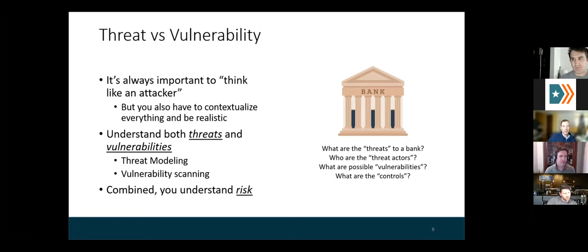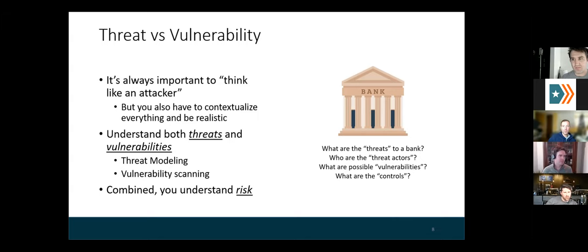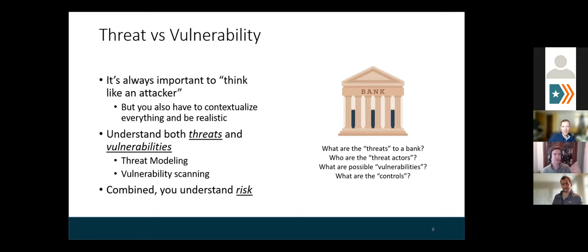Robbers with guns — absolutely. Robbers with guns specifically: the people could be threat actors and the threat there could be armed robbery. That's a spot-on example. We have one threat: armed robbery. Threat actors: bandits with guns. Inside corruption — somebody skimming money from the inside — nice, great one. So a threat to us could be a malicious insider, someone embezzling money or stealing money out the front door. The threat actor is the malicious insider; the threat is embezzlement or cooking the books.